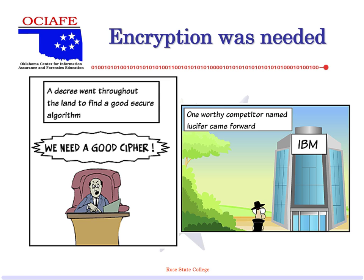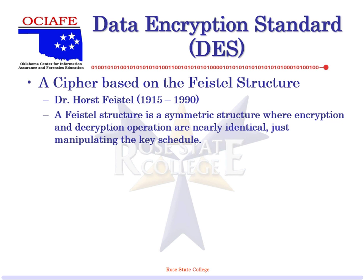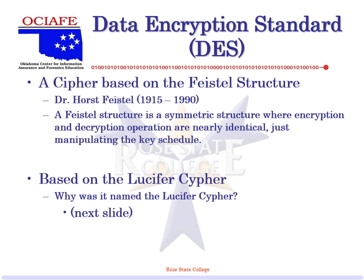A decree went throughout the land to find a good secure algorithm — we needed a good cipher. IBM answered that call with the Lucifer cipher. It's a cipher based on the Feistel structure, a symmetric algorithm where encryption and decryption operations are nearly identical — we just manipulate the key schedule. Feistel is the one who really came up with this way of doing it, and DES is based on the Lucifer cipher.